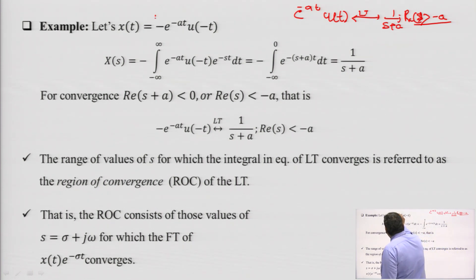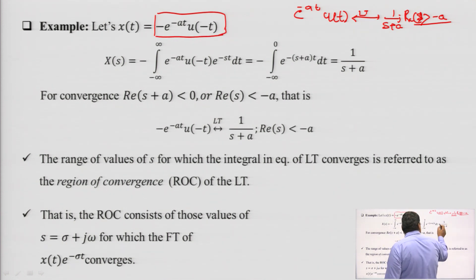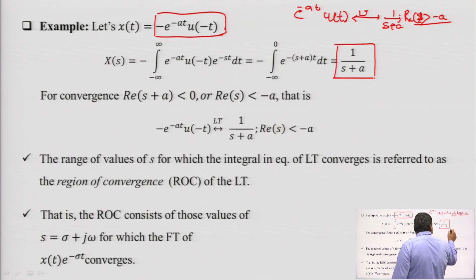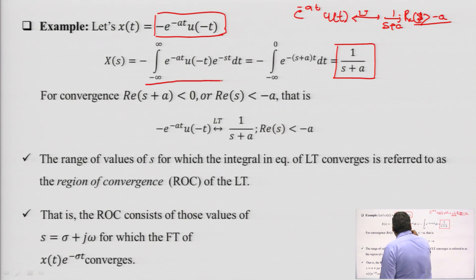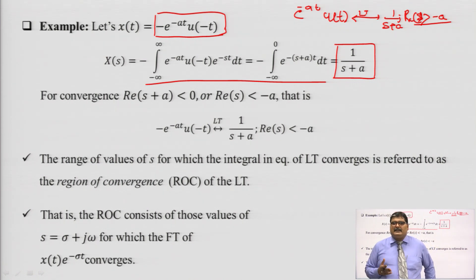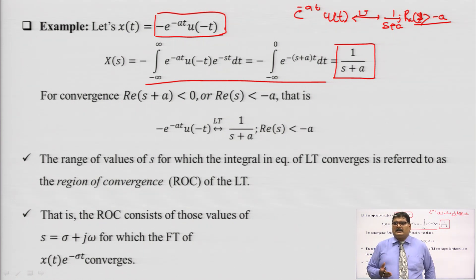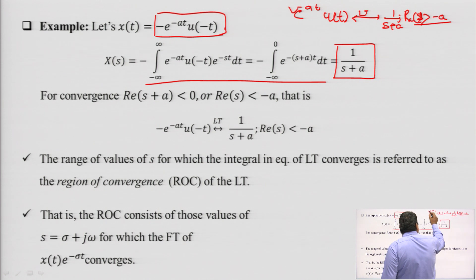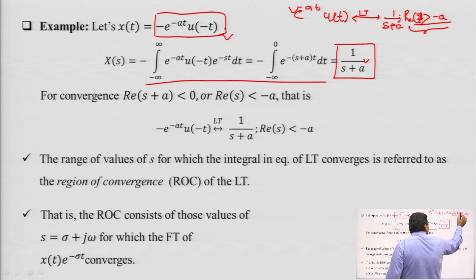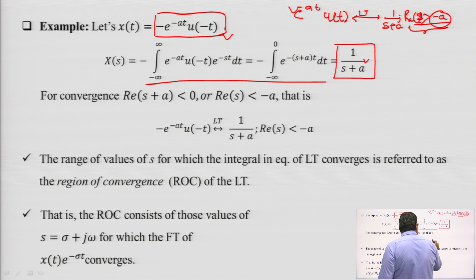For the second signal, −e^(-at)·u(−t): if we take its Laplace transform using the basic formula, we also get 1/(s + a), the same mathematical result. However, the region of convergence for this signal is real part of S < −a — the condition is less than, not greater than.